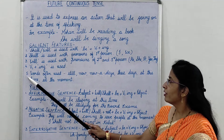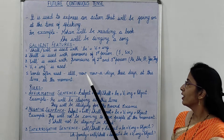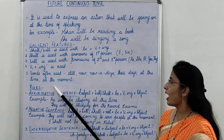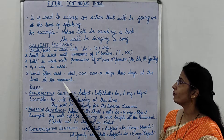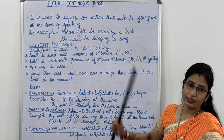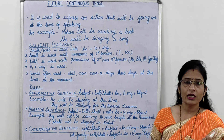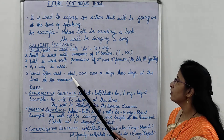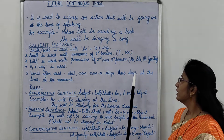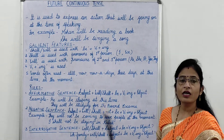Fifth salient feature is, words often used are: still, now, nowadays, these days, at this time, at the moment. These words are often used with Future Continuous Tense. Future Continuous Tense में अधिकतर इन शब्दों का प्रयोग होता है: still, now, nowadays, these days, at this time, at the moment।